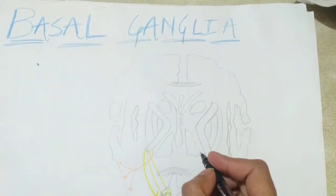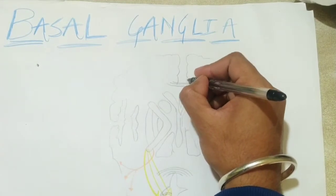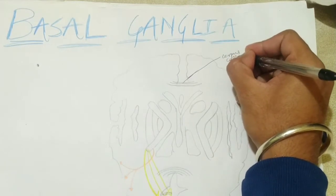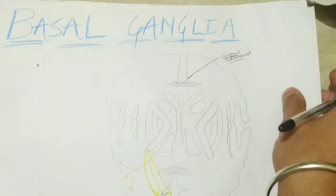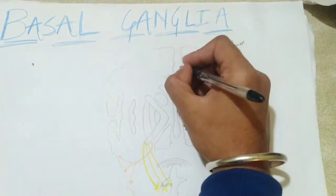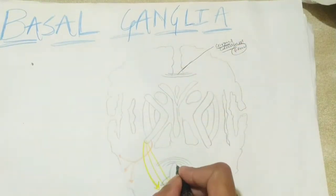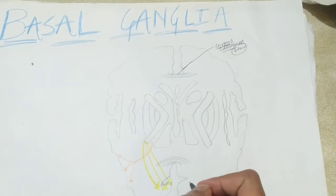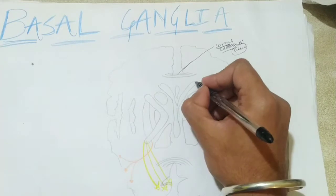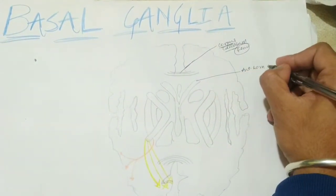First we will label this part — this is actually the corpus callosum. So this is your corpus callosum genu part, which you can see in the horizontal section of the basal ganglia. And these here are your lateral ventricles — specifically the anterior horn of the lateral ventricles.